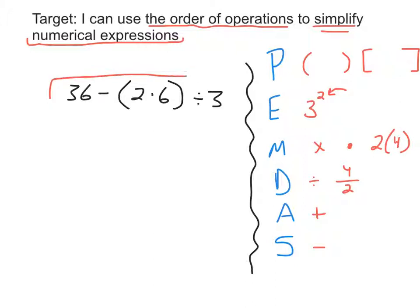Here's an example of a numerical expression. A numerical expression is made up of numbers and operations. Operations are addition, subtraction, multiplication, division, and powers or exponents. Our goal is to simplify — simplify is the verb, you do it. And each time you simplify an operation, you're simplifying the numerical expression. But we must remember that every time we have a numerical expression with a variety of operations, it needs to be done in a certain way. That's called the order of operations.